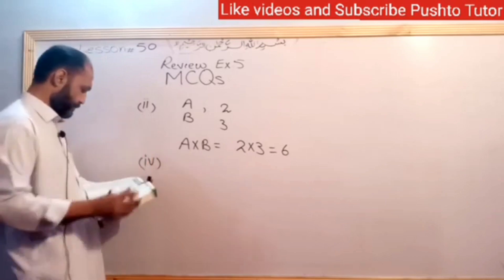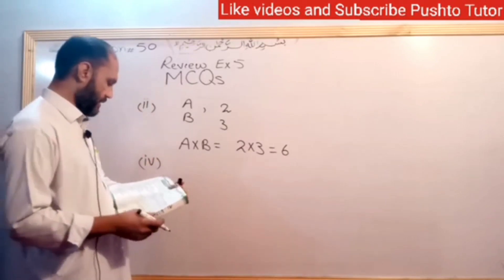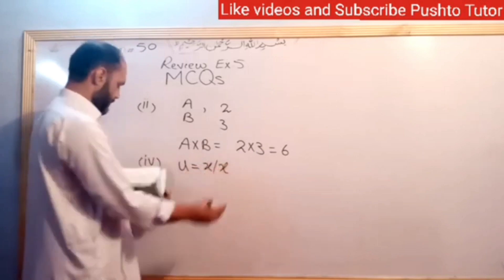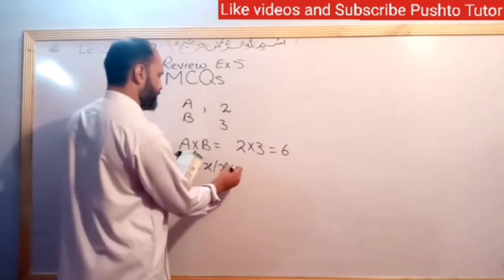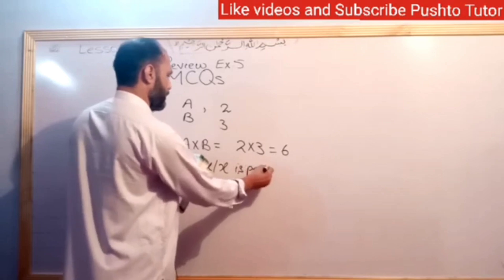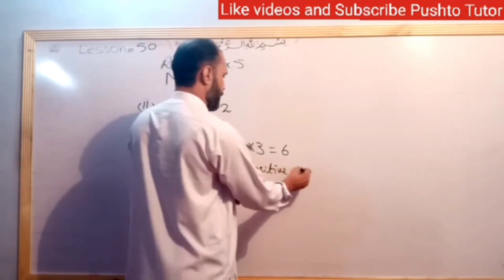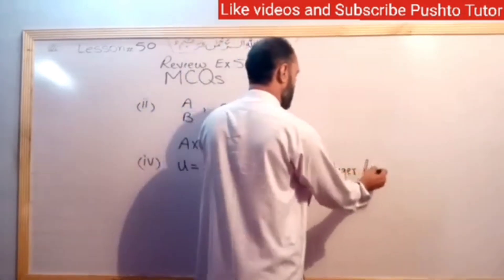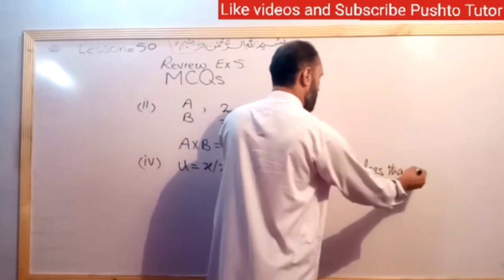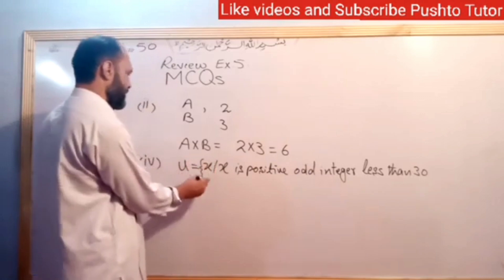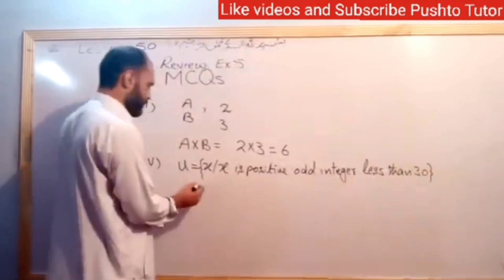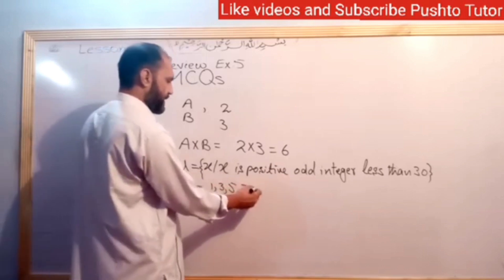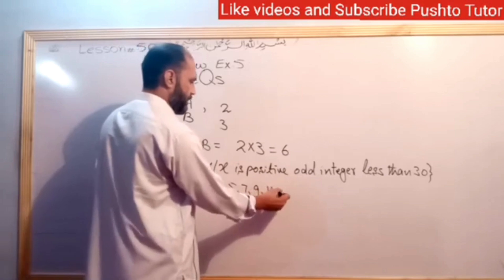Question number 5: the universal set U is defined as X such that X is a positive odd integer less than 30. So the universal set is {1, 3, 5, 7, 9, 11, ... up to 29}.